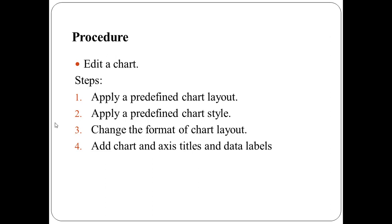To add an axis title, click anywhere in the chart and choose the relevant options to change the axis title of the primary horizontal axis or primary vertical axis. To add data labels to all data points of all data series, click the chart area. To add a data label to a single data point in a data series, click the data series that contains the data point you want to label, use relevant tools, choose data labels, and then click the display option.